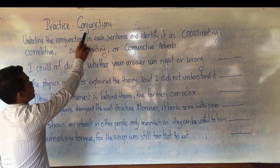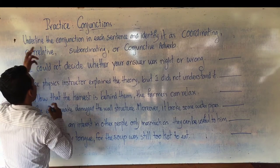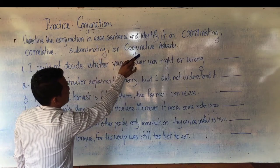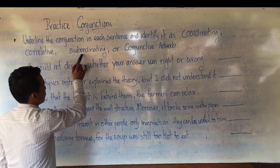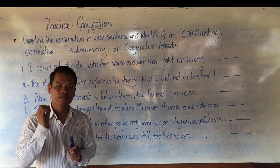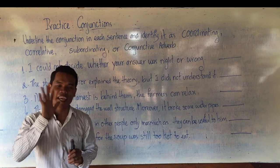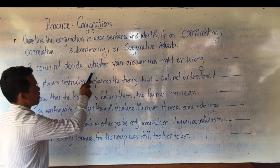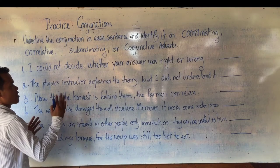Now for practice — conjunctions. The instruction is: underline the conjunction in each sentence and identify it as coordinating, correlative, subordinating, or conjunctive adverb. When you see conjunctive adverb, it reminds you of 'HOTSHOT,' a shortcut to remember ten conjunctive adverbs.